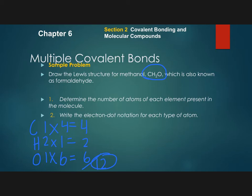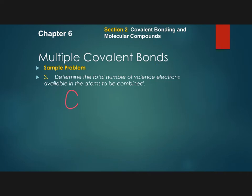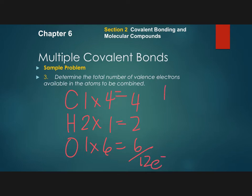This is the math step. If you show this work on a test and I see that you have the correct number of electrons but somehow mess up on the placement, I can possibly offer you partial points. So make sure that you're showing this work so that you can reference it later.